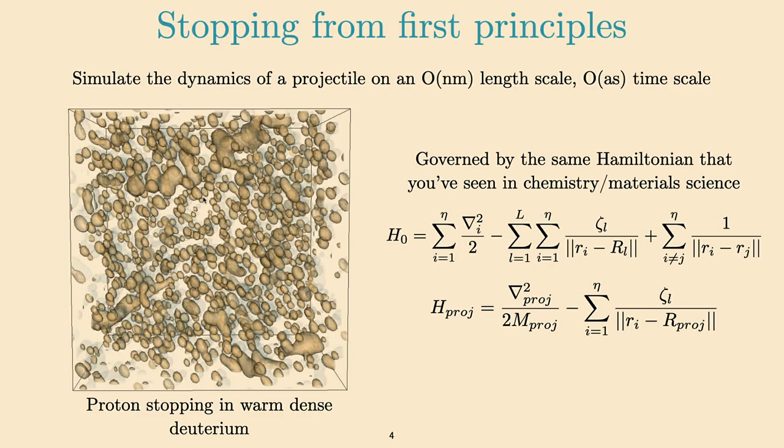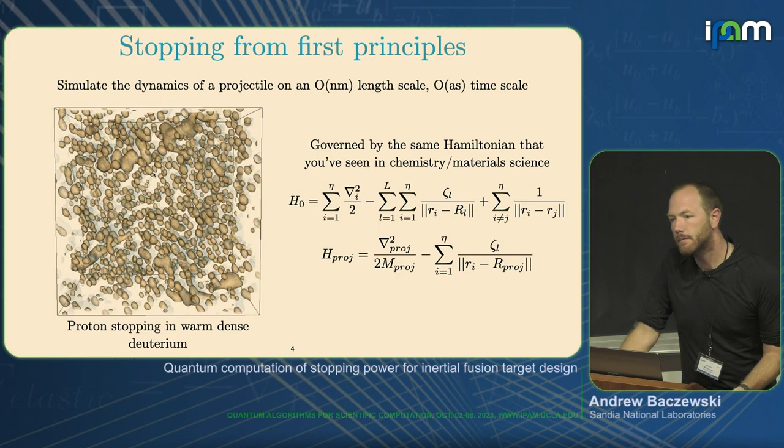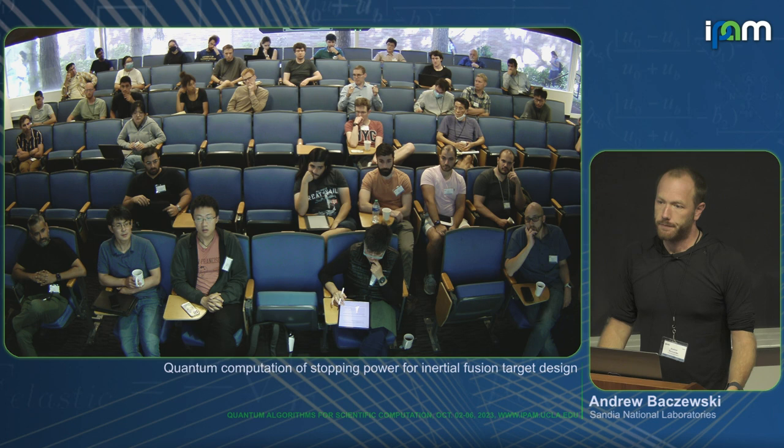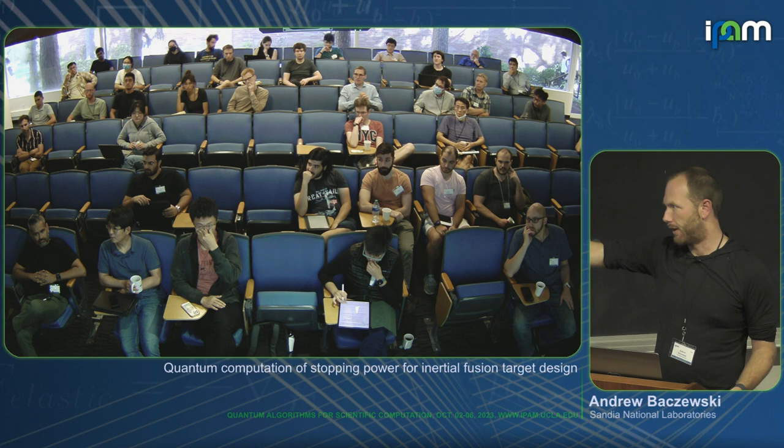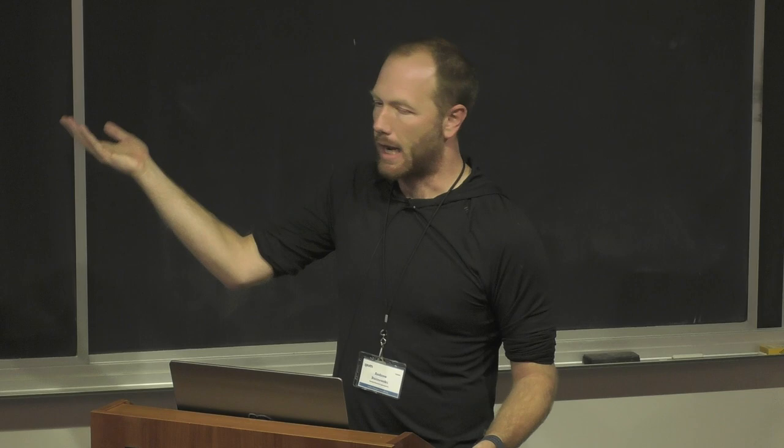Q: Do you also calculate the dynamics of the medium? Yes, effectively. The nuclei are fixed, but you also want to see what the electrons in the medium do. At the velocities we care about, the ions will move very little other than the projectile ion. The projectile ion moves at a velocity commensurate with the electronic velocity, so that one nucleus is going non-Born-Oppenheimer.